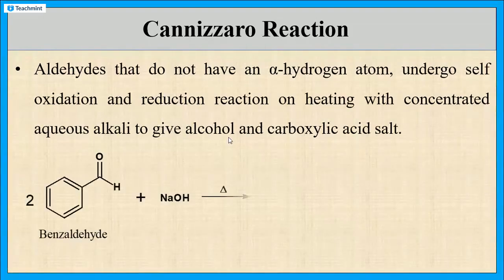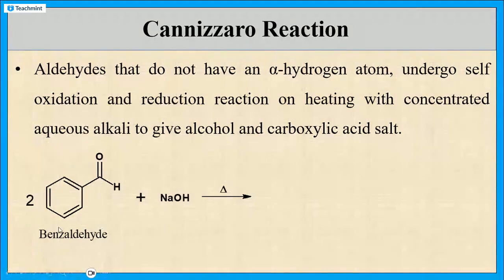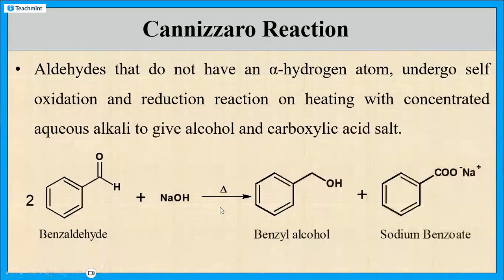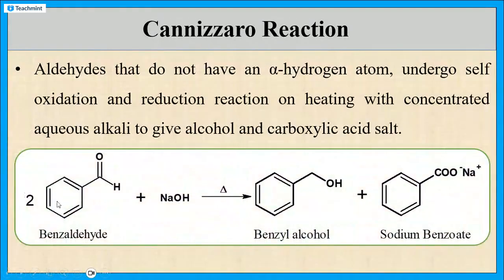Let us see one example by taking benzaldehyde. Benzaldehyde does not contain alpha hydrogen atoms, so we are taking this example. Here, two molecules of benzaldehyde react with sodium hydroxide, which is a base. On heating, we get one product as benzyl alcohol and another product as sodium benzoate. In this reaction, one molecule of benzaldehyde gets oxidized to sodium benzoate, and another molecule gets reduced to benzyl alcohol.